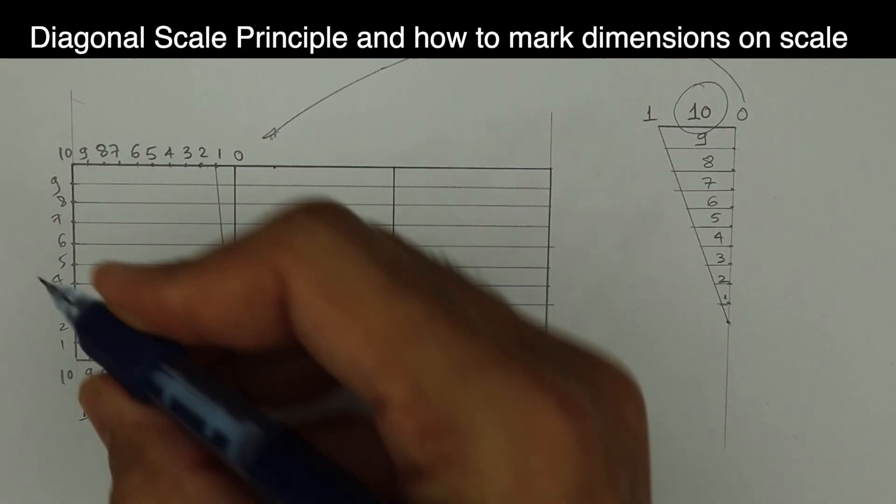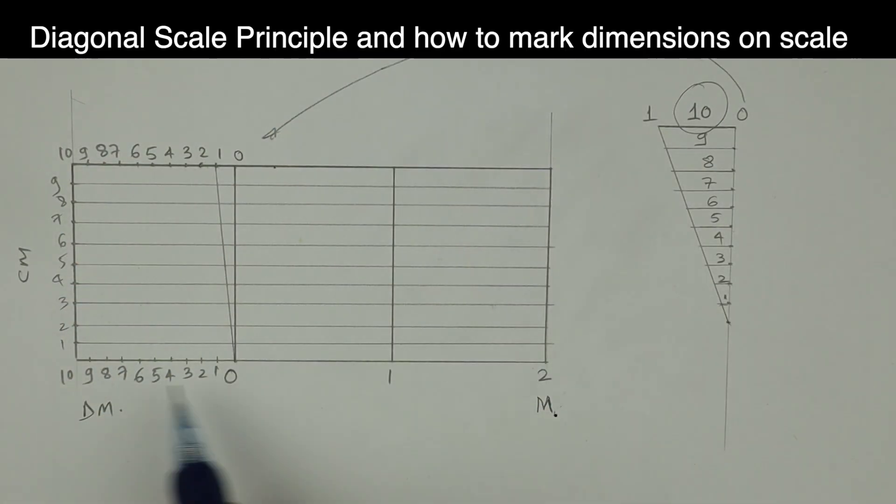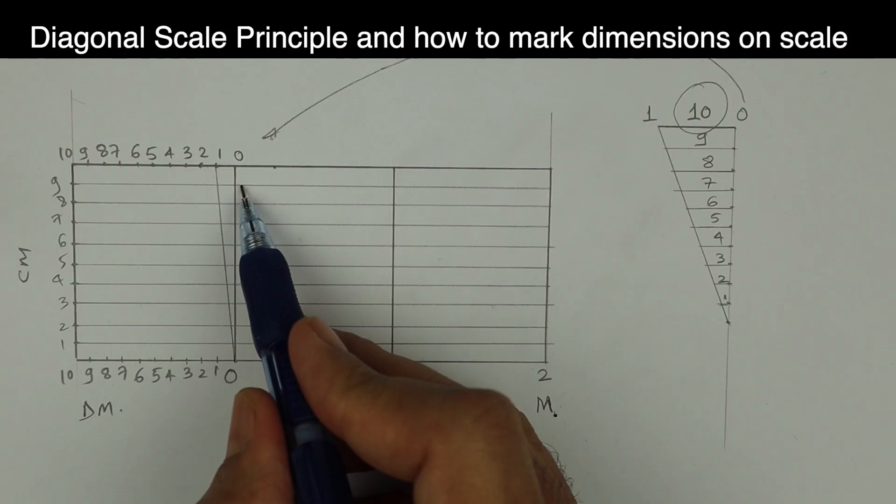Let's say this is meter, decimeter and centimeter. So this is meter. Meter divided into 10 parts, you'll get decimeter. This is decimeter. You want to divide that into 10 parts, you'll get centimeter.